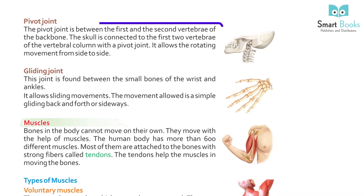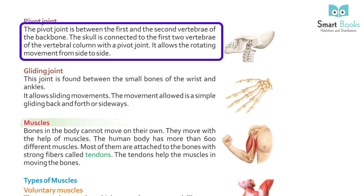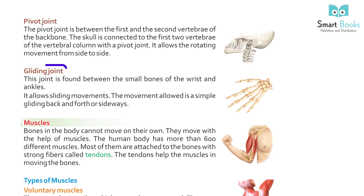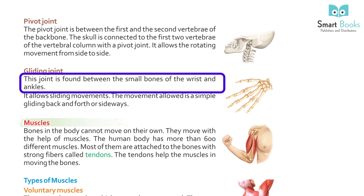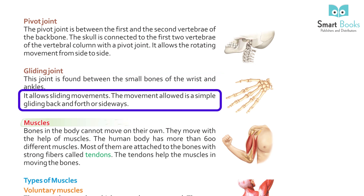Pivot joint: the pivot joint is between the first and the second vertebrae of the backbone. The skull is connected to the first two vertebrae of the vertebral column with the pivot joint. It allows rotating movement from side to side. Gliding joint: this joint is found between the small bones of the wrists and ankles. It allows sliding movements — simple gliding back and forth or sideways.